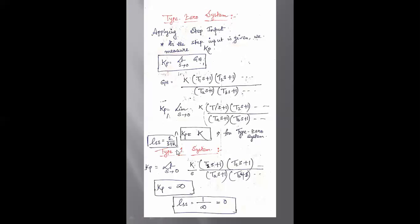For a type 1 system with step input, since there is one pole at the origin, Kp equals limit s tends to 0 of GH becomes infinity. So the steady state error equals 1/infinity equals 0. For a type 1 system when a step input is applied, the positional error coefficient is infinity and the steady state error is 0.